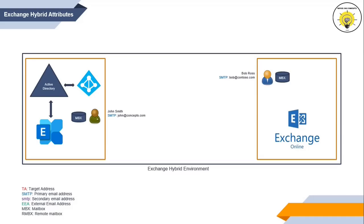Let's assume we have Exchange Hybrid deployed. We have one user on-premise named John Smith, and another user Bob Ross whose mailbox was in on-premise but has now been migrated to Office 365. John's mailbox is hosted on-premise. In Exchange Hybrid, we deploy Azure AD Connect as a prerequisite. When John's account was synchronized to Office 365, it reflects as a mail-enabled mail user in Office 365, with a target address bob@concepts.com in the external email address attribute. External email address is used for auto-discover queries or to route emails from Office 365 to on-premise.